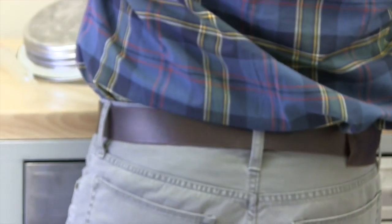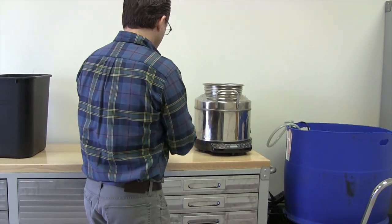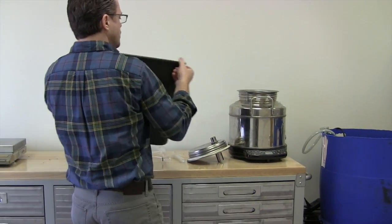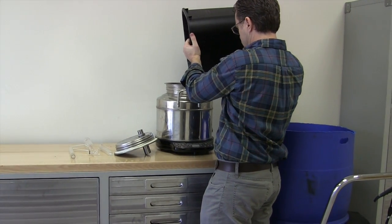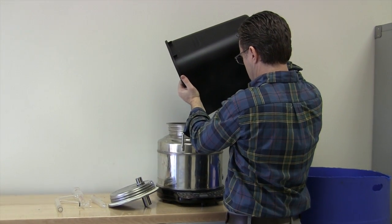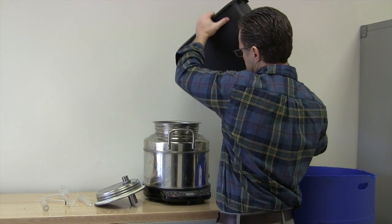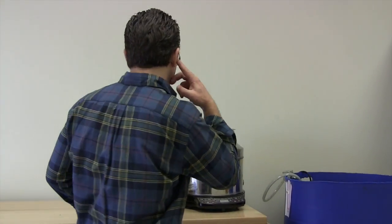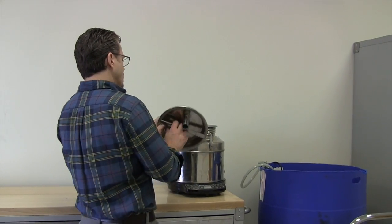I usually just start with one liter of water and then we put in the kilo of Lavendin. The kilo of this material works really nice in this size unit, so it doesn't have to be really packed down tightly, which you don't want.